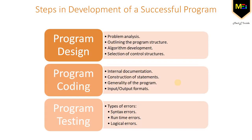Now, let's have a look for the steps involved in development of a successful program. The program development process includes the following three stages: program design, program coding, and program testing. Program design is concerned with the development of a strategy to be used in writing the program in order to achieve the solution of a problem. The program design involves the following four stages: problem analysis, outlining the program structure, algorithm development, and selection of control structures.